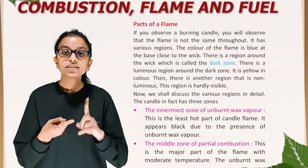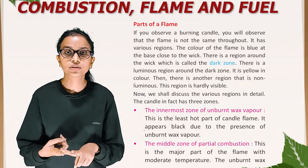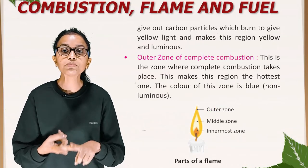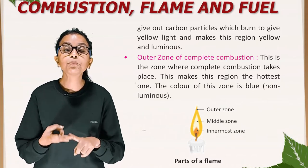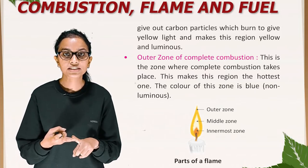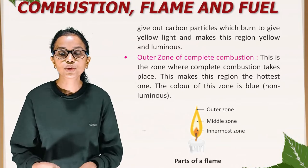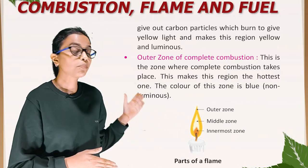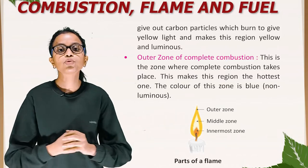The second zone is the middle zone of partial combustion. This is the major part of the flame with moderate temperature. The unburnt wax gives out carbon particles which burn to give yellow light, making this region yellow and luminous. The third zone is the outer zone of complete combustion — this is the zone where complete combustion takes place, making it the hottest region. The color of this zone is blue and non-luminous. This diagram shows the parts of flame: outer zone, middle zone, and innermost zone.